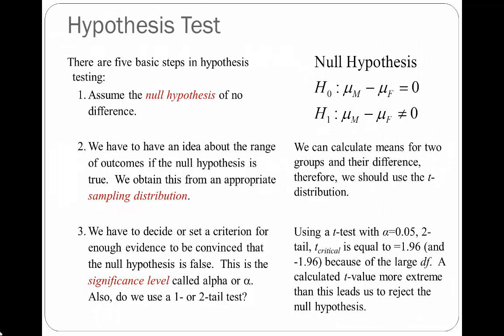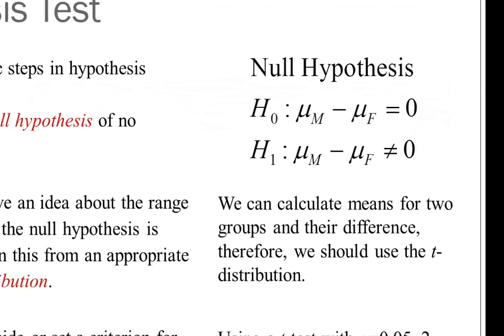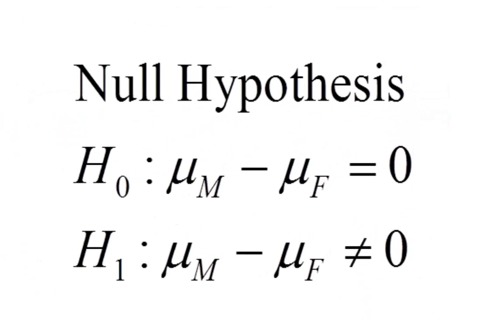Let's put this into our hypothesis testing framework. There are five steps. Step one is to assume the null hypothesis of no difference. Our null hypothesis H-sub-zero is that in the population there is no difference in average income comparing men and women — that is, mu sub M minus mu sub F equals zero.